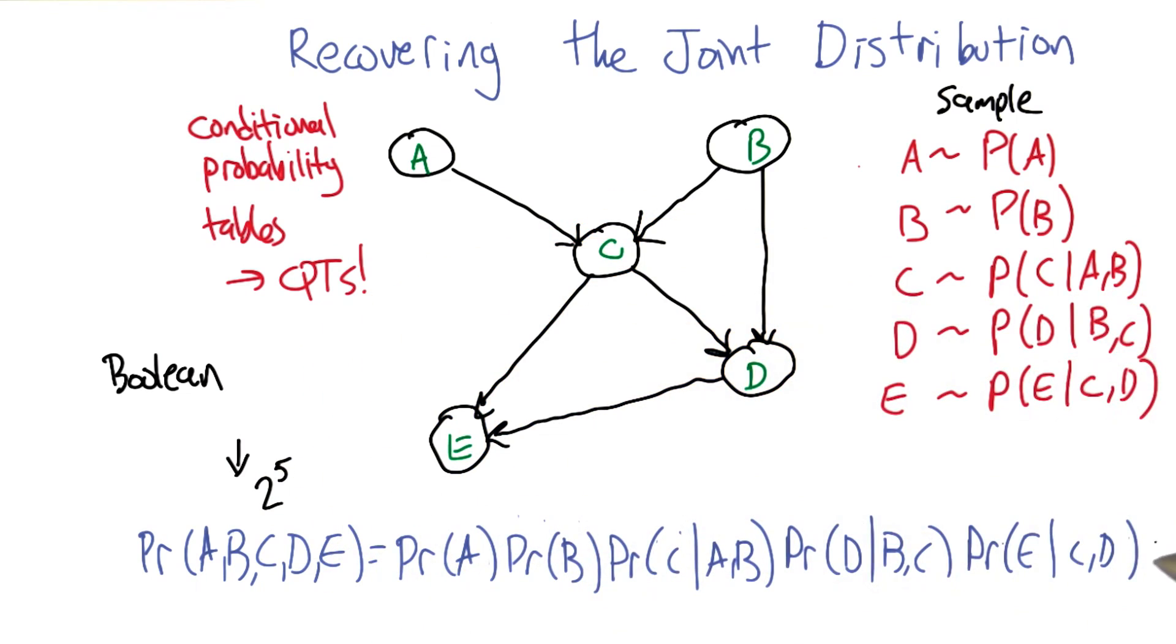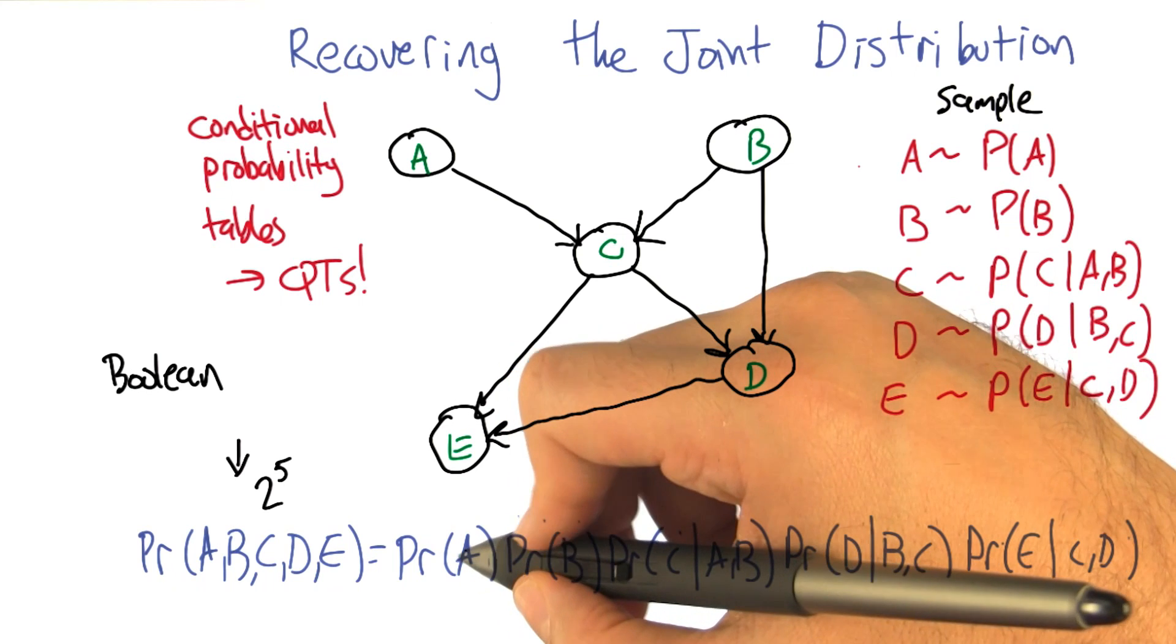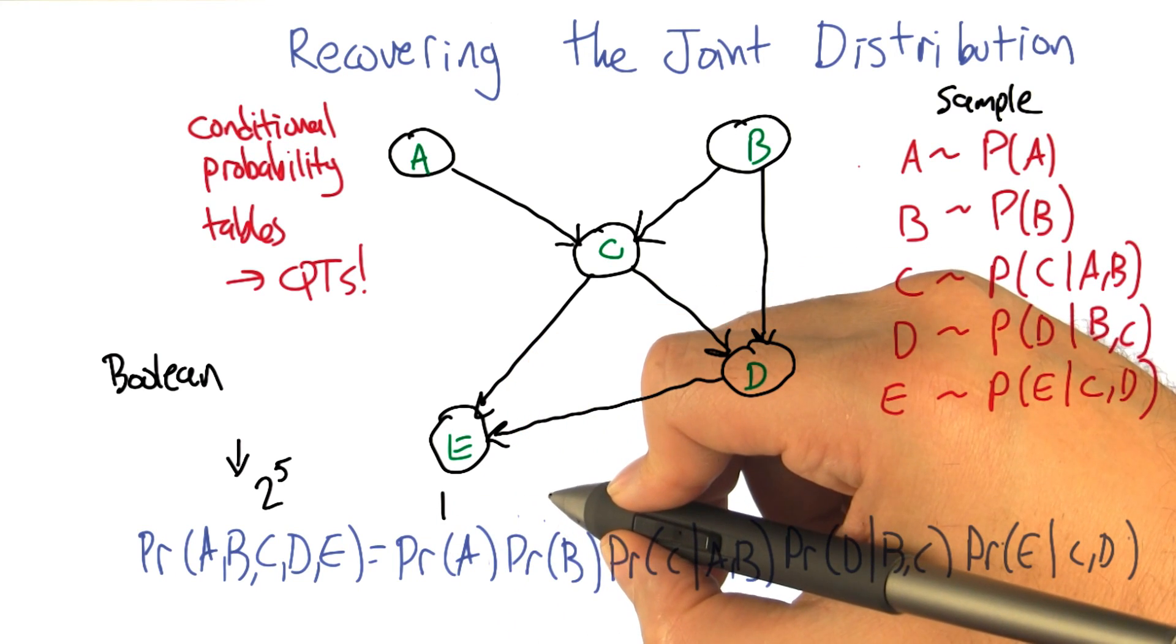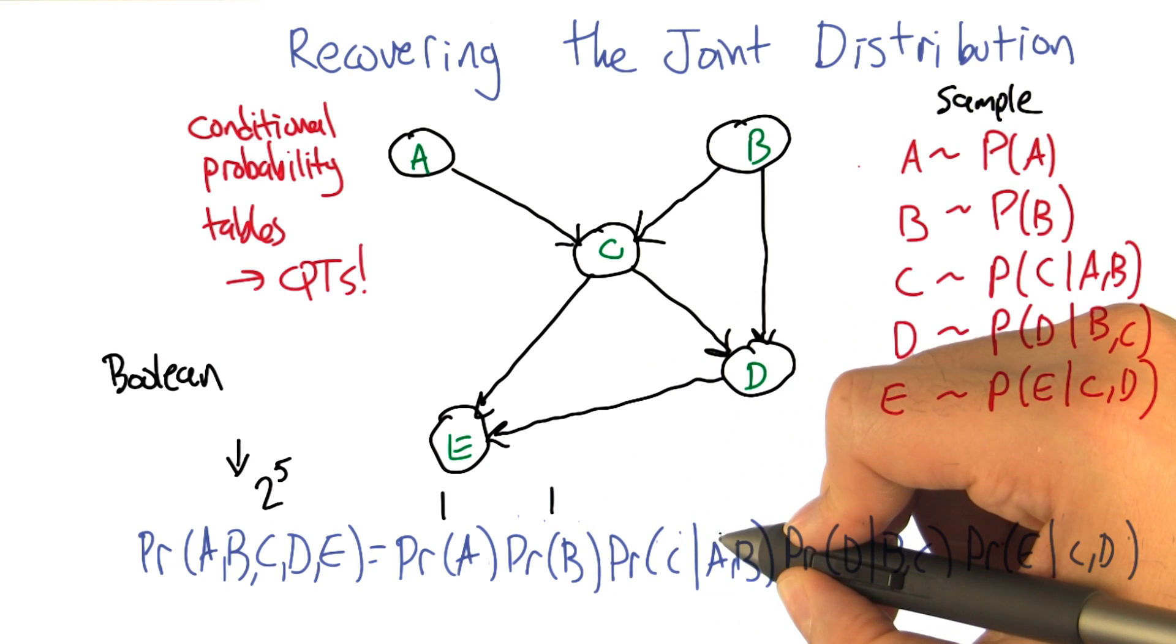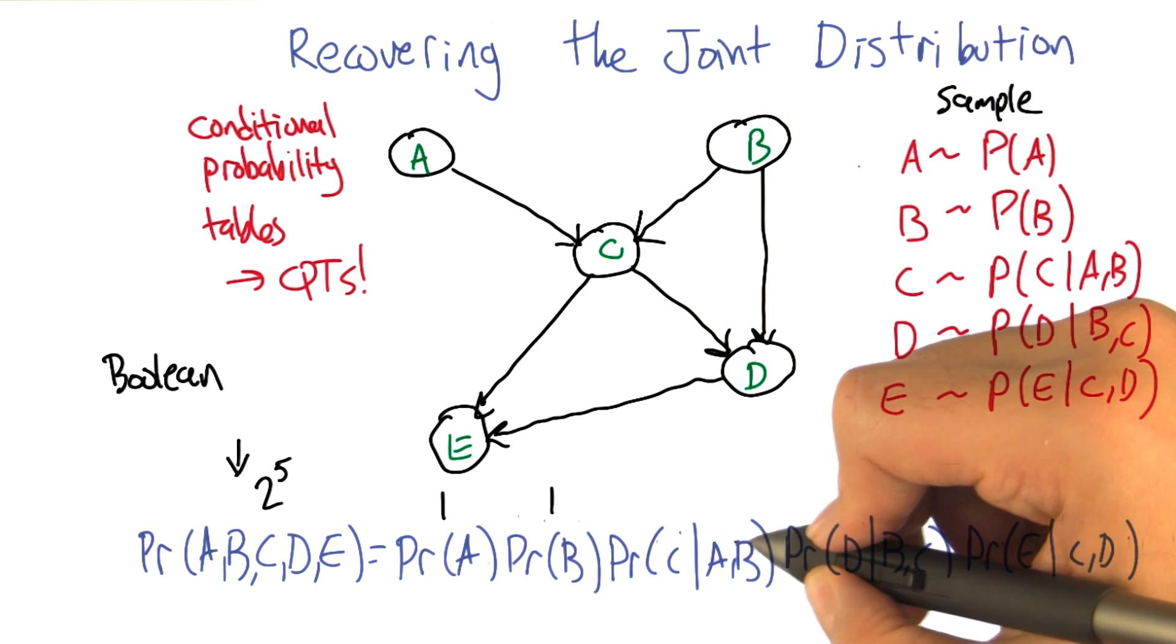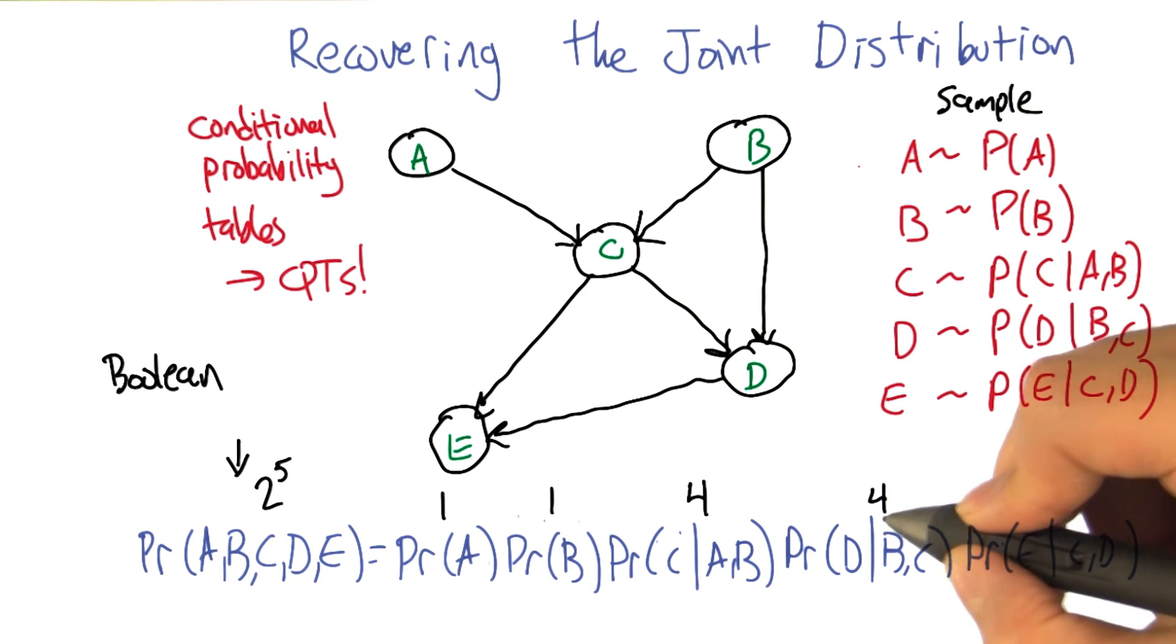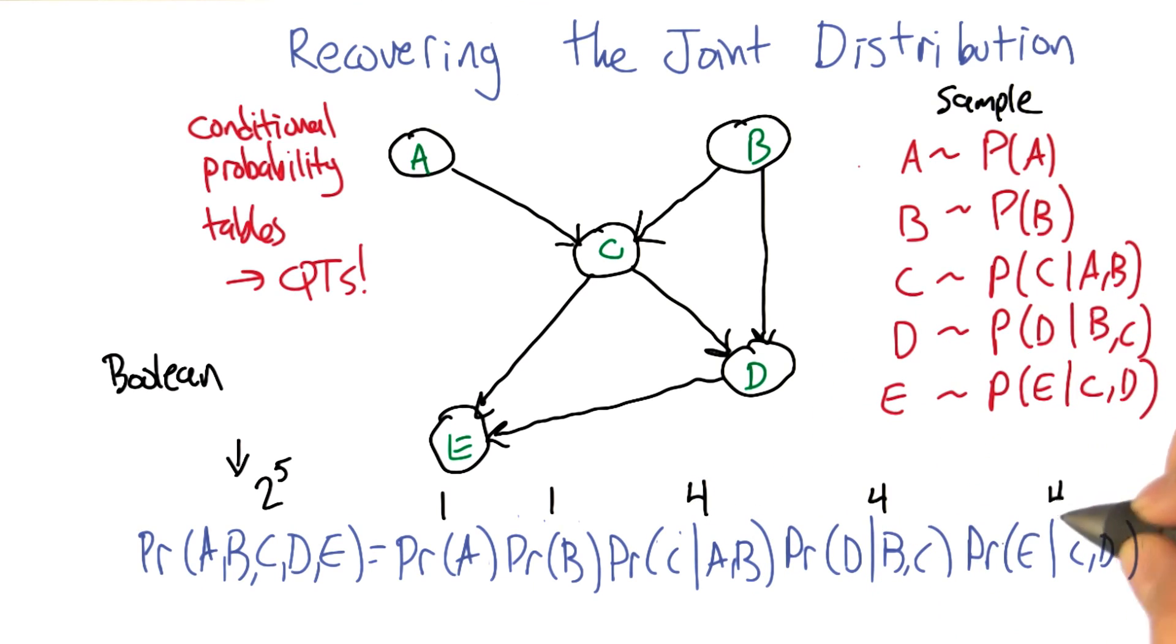But here, we've broken it down into smaller chunks. The probability of A is specified by a single number. Probability of B is specified by a single number. Probability of C is specified by a single number for each combination of A and B. That's four of them. This also requires four values, and this requires four values.